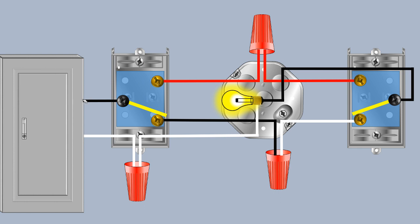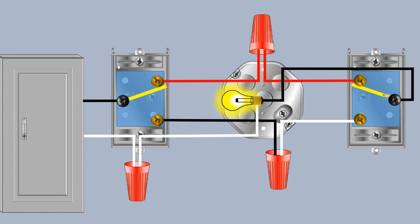Following the path for current: it comes from our line through our first three-way switch, down our traveler, spliced inside the wire connector, continuing on the white conductor — which is acting as a traveler — through the paddle to the black common screw, then back to the light on the switch leg, and back on the identified neutral conductor to the panel, completing the path with the light on. If we flip the second switch to the up position, that path is broken and the light goes off. Flipping the first switch back up re-establishes the path through the red traveler, back to the light on the switch leg, completing the circuit again.